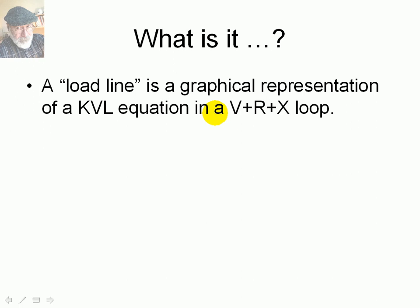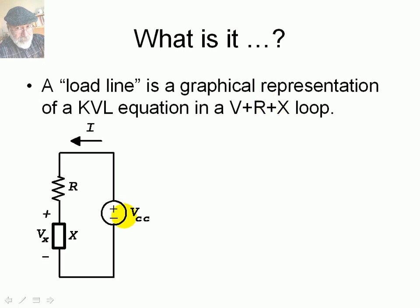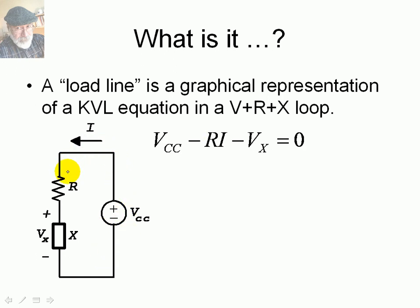The KVL equation is in a loop formed by a DC voltage source, a resistor, and a certain element — element X. The voltage in that element is Vx, which is unknown. We can write a KVL equation in that loop: Vcc minus the drop R·I minus the drop Vx equals zero.